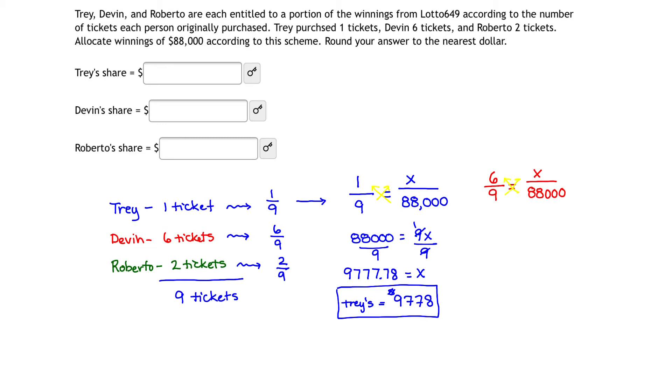Again, to solve, we can do a quick multiplication and divide. Six times 88,000 gives us 528,000. Nine times X gives us 9X, so we have 528,000 equals 9X, and then we divide both sides of that equation by nine to solve for X in this proportion. That means that Devin is entitled to 58,666.666, but rounding to the nearest dollar is going to give us $58,667. This is what Devin's going to win.